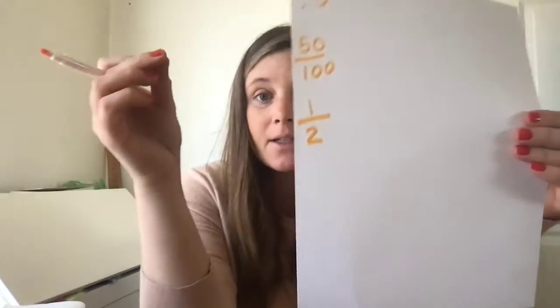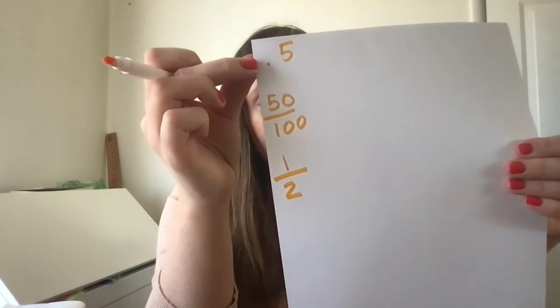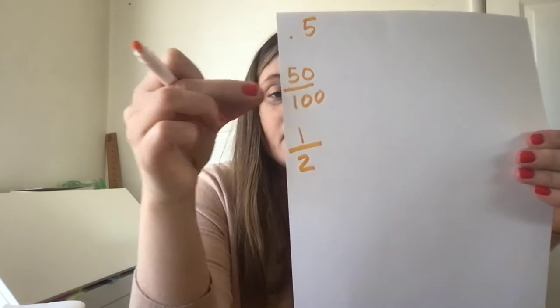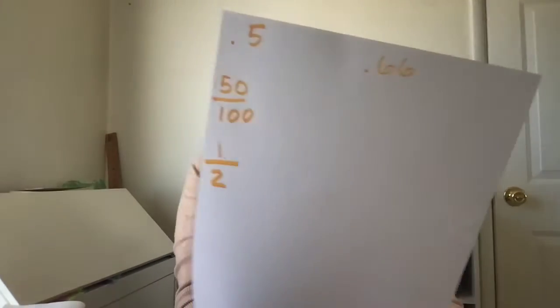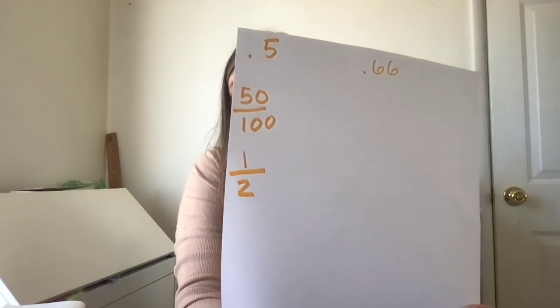So you have three index cards in this pile: 0.5, 50 over 100, and one-half. New index card: 0.66. On a new index card, write it as a fraction: 66 over 100.